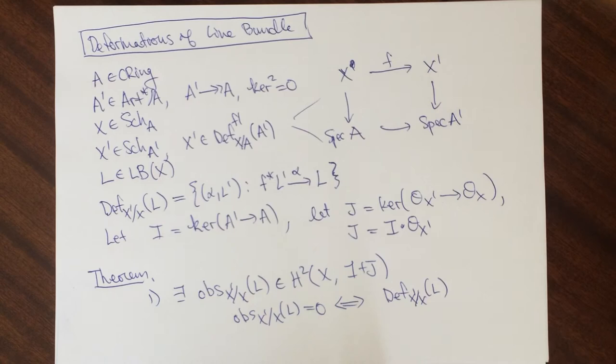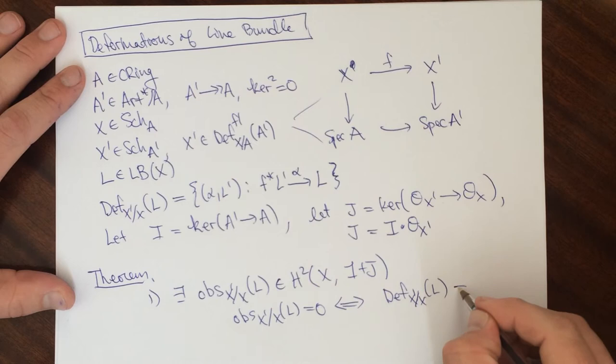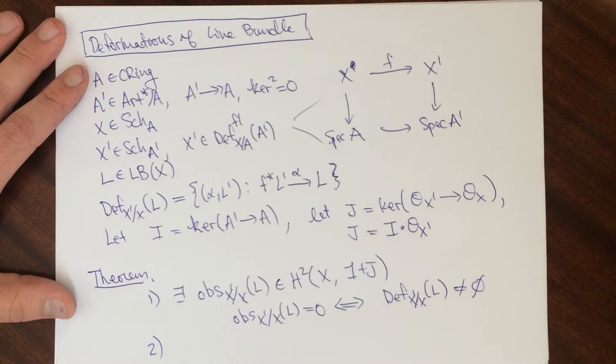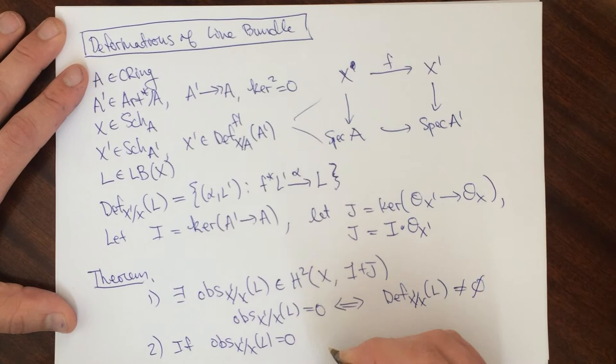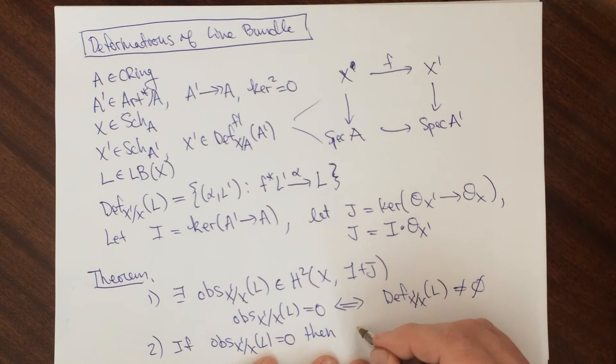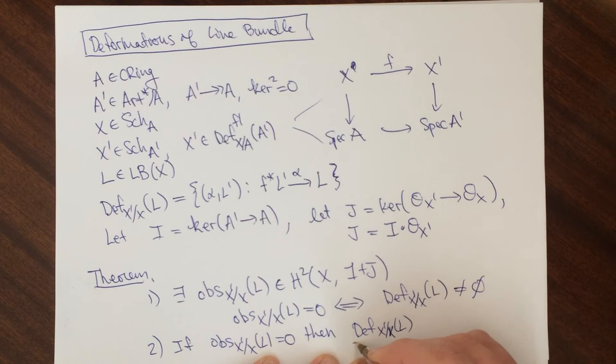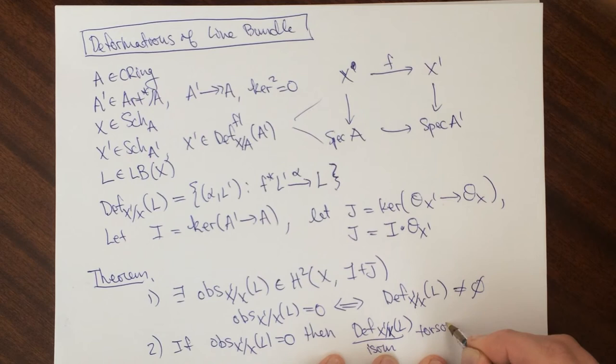I'm also going to remark that sometimes I'm going to call deformations lifts. So the lifts of the line bundle to X prime are not empty. And secondly, so if the obstruction vanishes, then there exists a deformation and the deformations of this modulo isomorphism are a torsor under H^1 of the same thing.